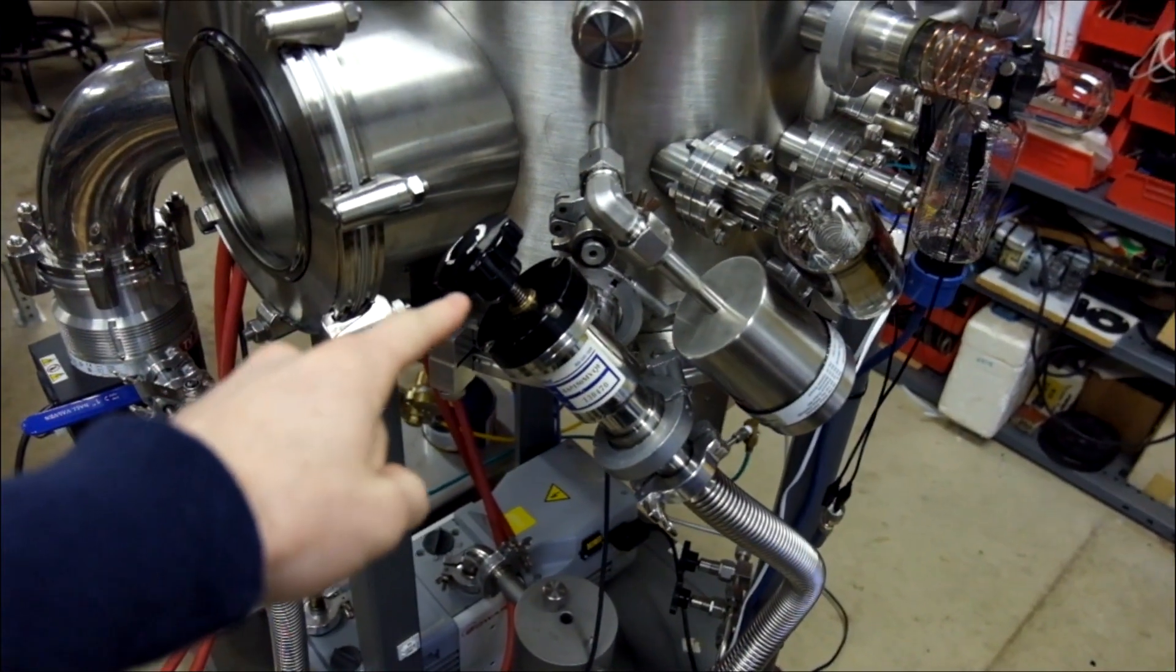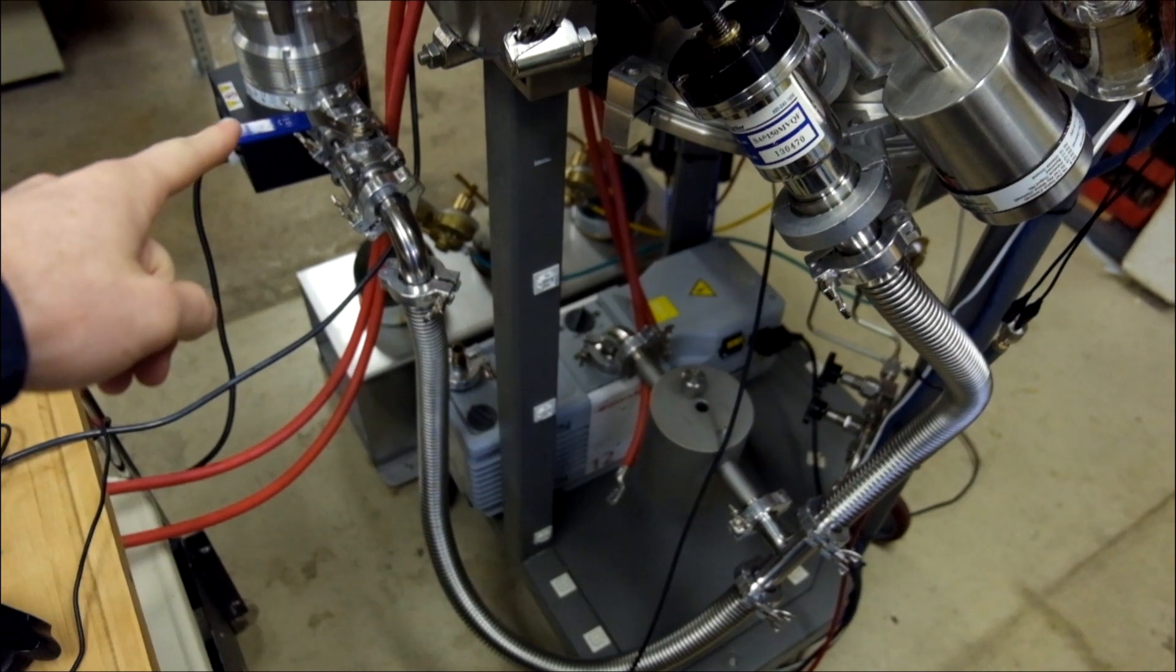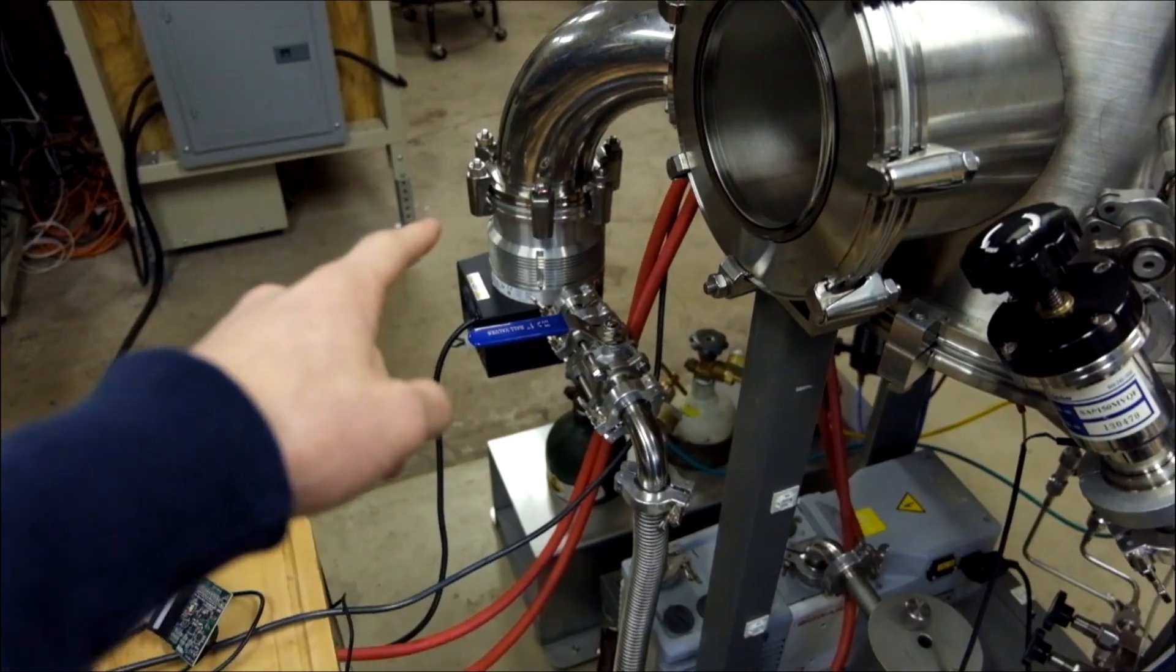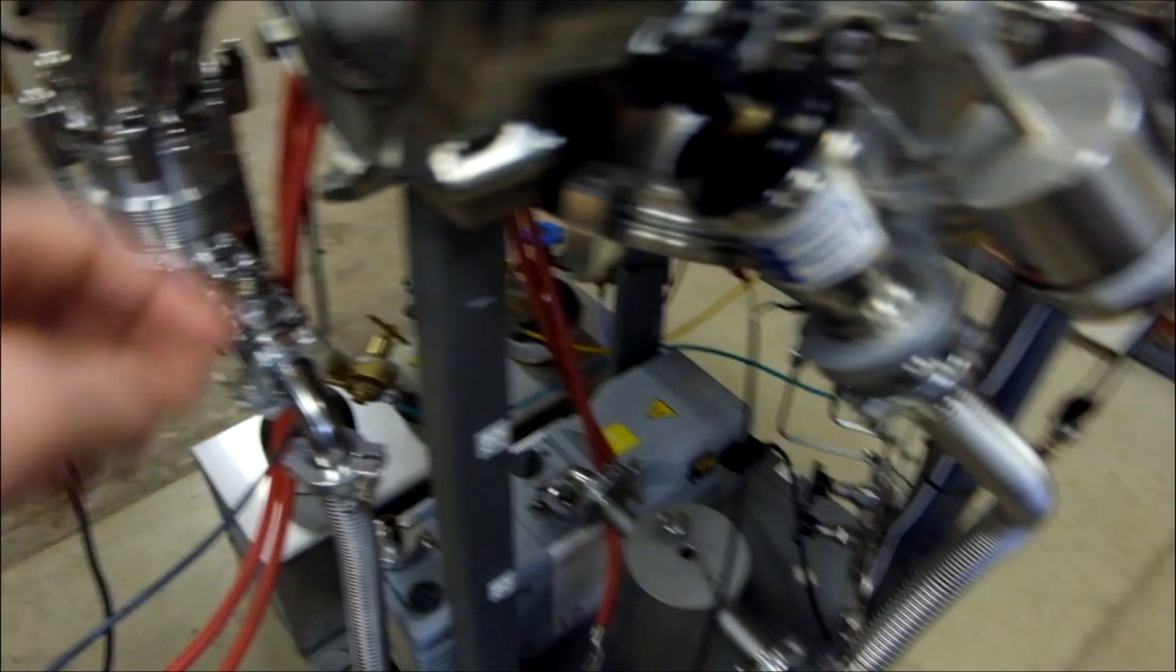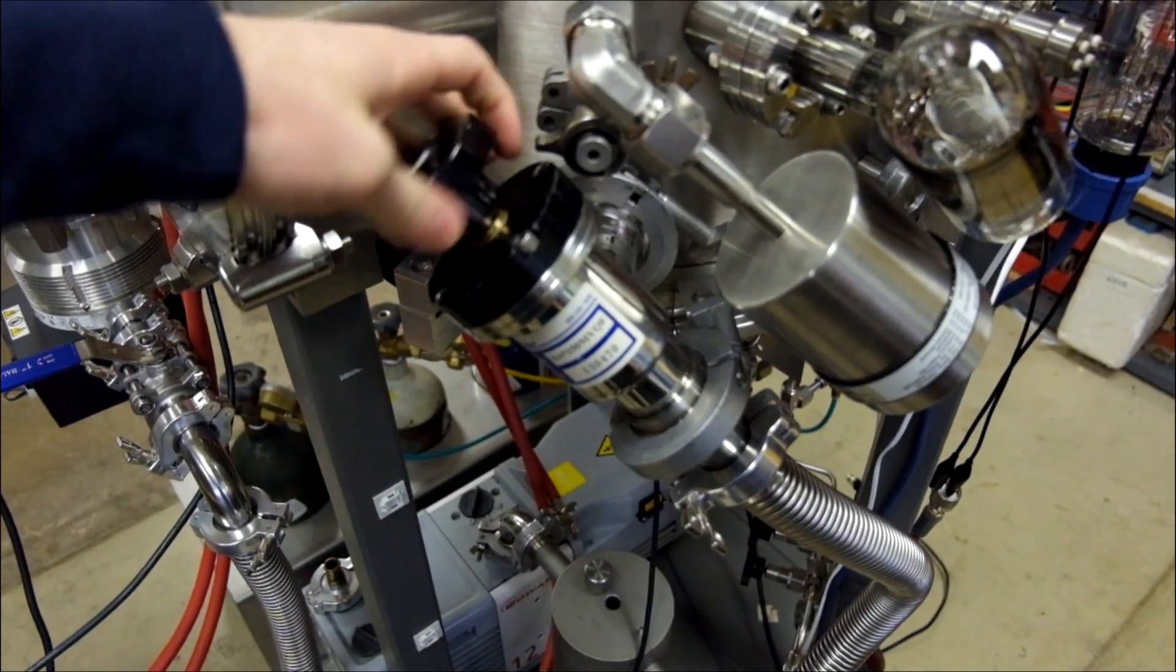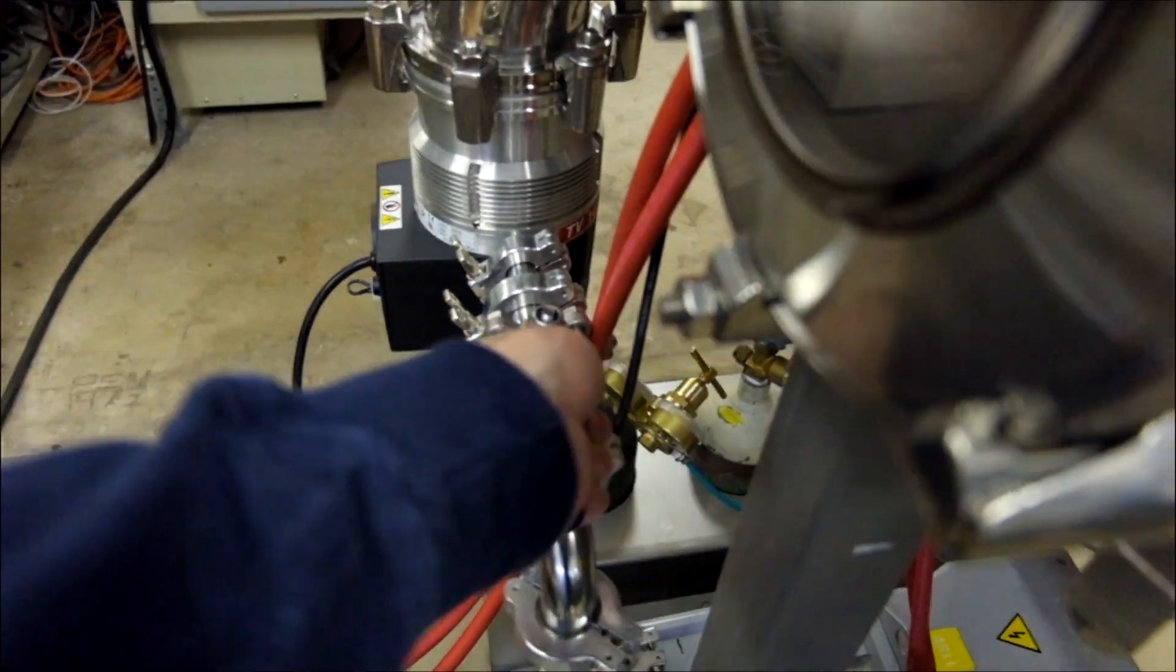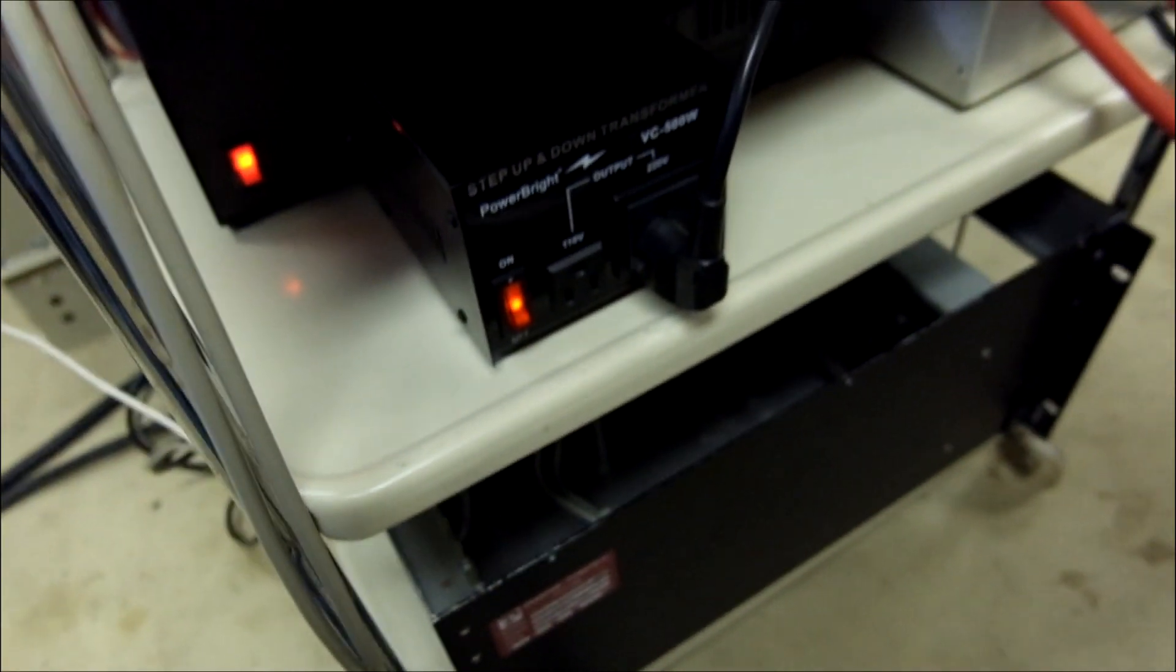So now, to turn the turbo pump on, I'm going to close the isolation valve to the chamber, and then I'm going to open up that ball valve with the blue handle there, and you can see the roughing line is pretty simple. Then that's going to switch to the mechanical pump, instead of pumping the chamber, it's going to be backing the turbo pump, and then I'm going to flip on the step-up transformer down here. We're just going to send 240 volts to the turbo pump. So we'll close this guy, open the blue handle, and then flip on the step-up transformer.